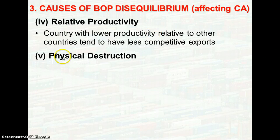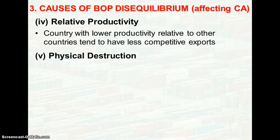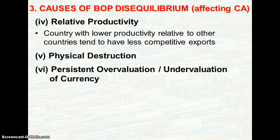Next is physical destruction. Given the destruction of infrastructure, buildings, and factories due to natural disasters, this will destroy the infrastructure used to produce goods and services, requiring the country to increase their imports for capital reconstruction, worsening the trade deficit and hence the balance of payments.